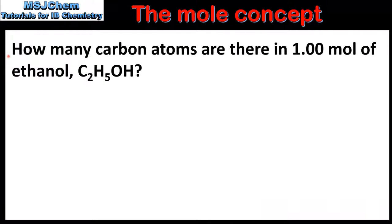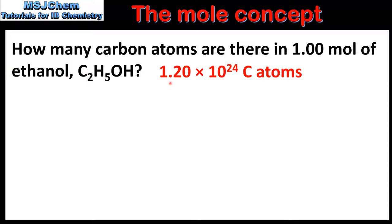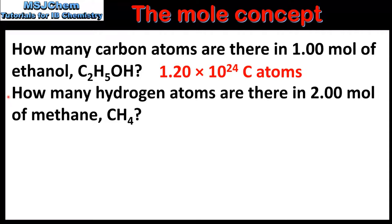So we'll end the video by going back to the questions we looked at at the start. The first question was: how many carbon atoms are there in one mole of ethanol? The answer is 1.20 x 10 to the 24 carbon atoms. In one molecule of ethanol there are 2 carbon atoms, so to find the number of carbon atoms in one mole we multiply 2 by the Avogadro constant.